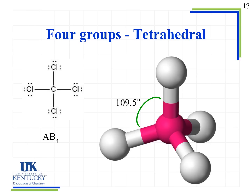Next we go to four groups, which we call tetrahedral. This one's a little different — we might think these angles would be 90 degrees, but they're not, because these molecules are three-dimensional. With one central atom (A) and four bonding groups (AB4), we get an angle of 109.5 degrees. Model sets are available in the classroom, my office, and the Gen Chem Learning Center so you can build and rotate these molecules. I'll also provide a link to an online 3D model.